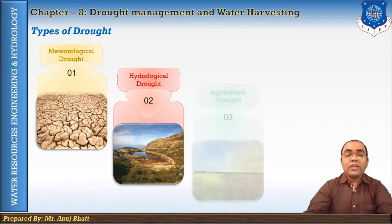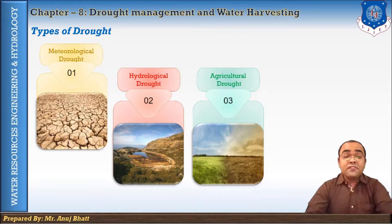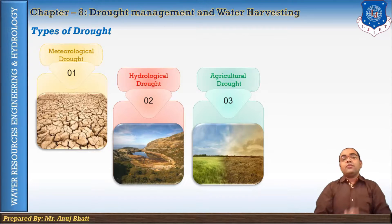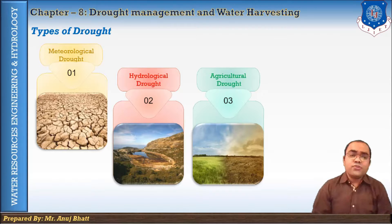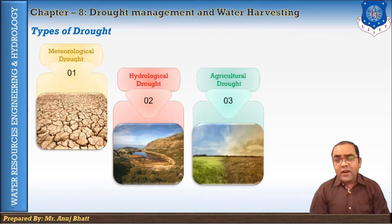Water use affected by drought can include purposes as varied as power generation, flood control, irrigation, drinking water, industries, and recreation. Agricultural drought occurs when there is not enough water available for a particular crop to grow at a particular time. This drought doesn't depend only on the amount of rainfall.